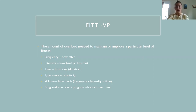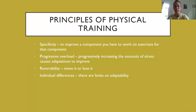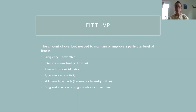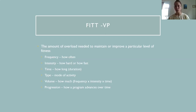FITT-VP is an acronym related to progressive overload that guides our training efforts. It stands for: Frequency — how often you exercise; Intensity — how hard or how fast; Time — the duration of the activity; Type — the mode of activity; Volume — which equals frequency times intensity times time; and Progression — how a program advances over time. FITT-VP describes the amount of overload needed to maintain or improve a particular level of fitness.